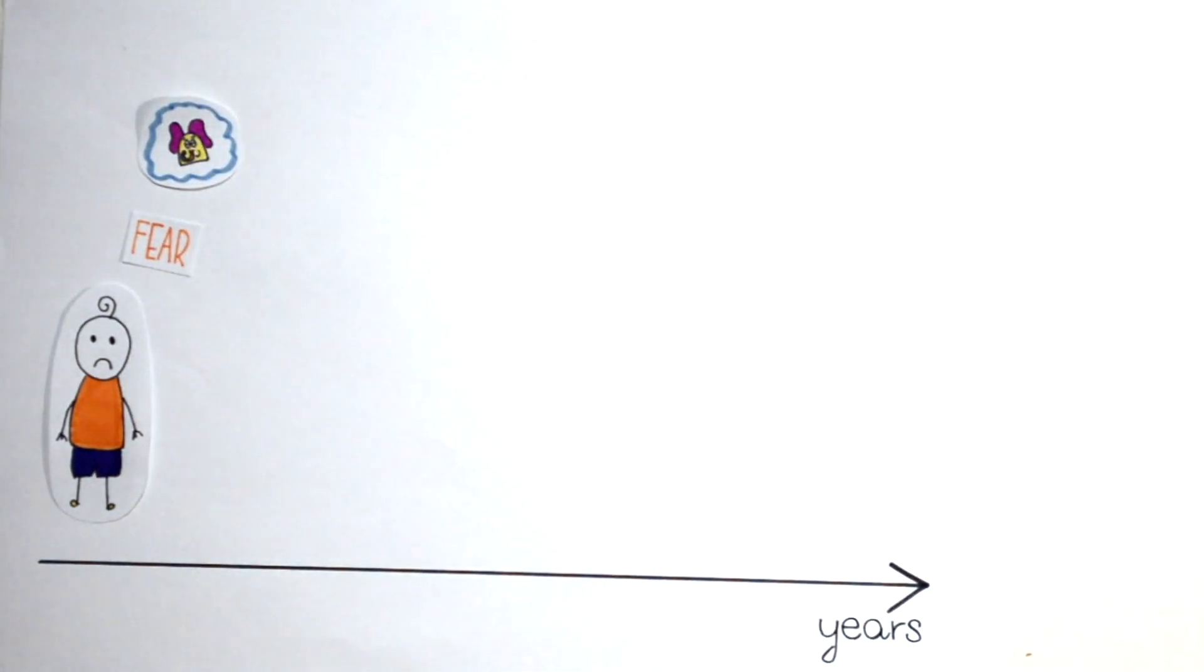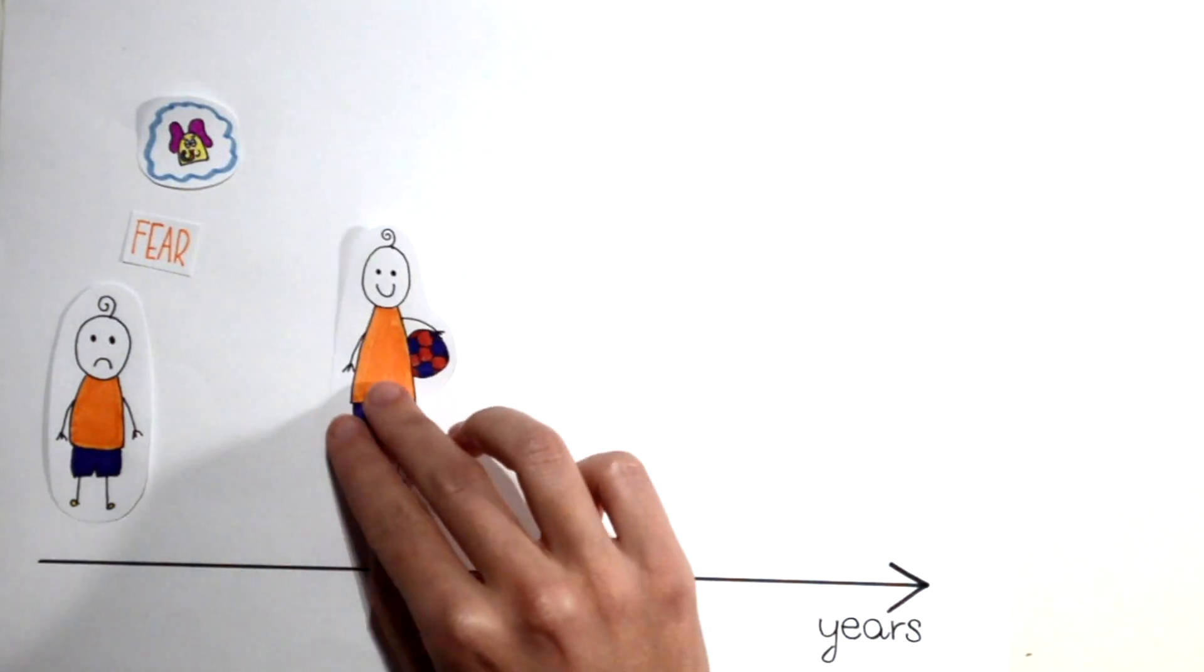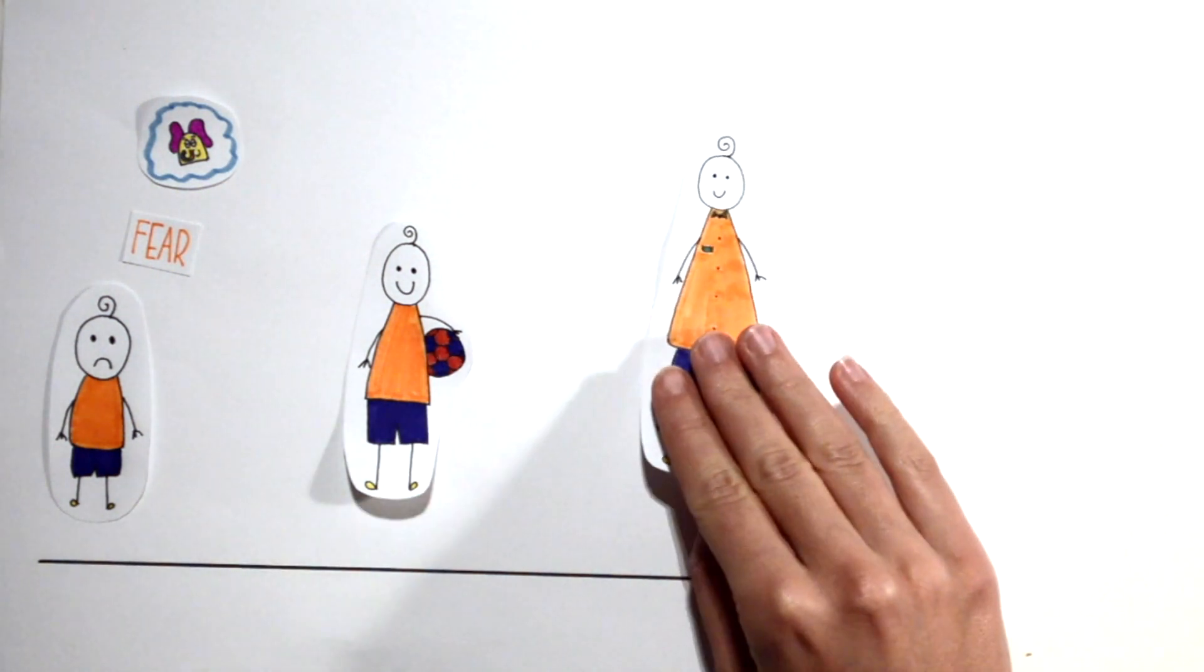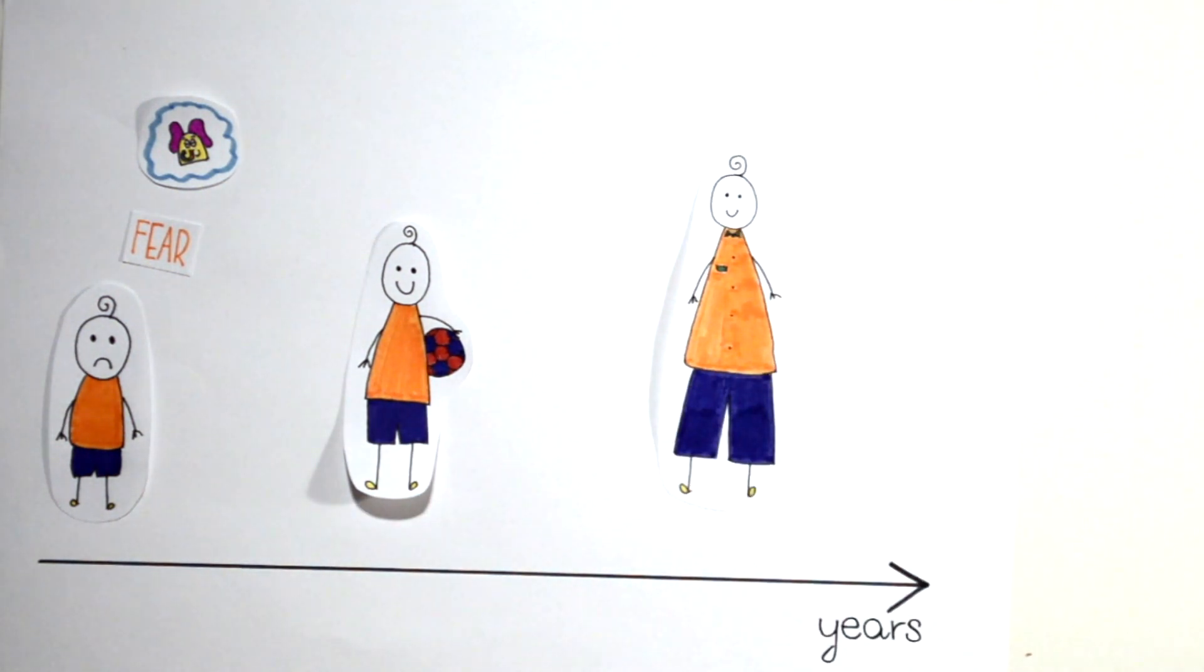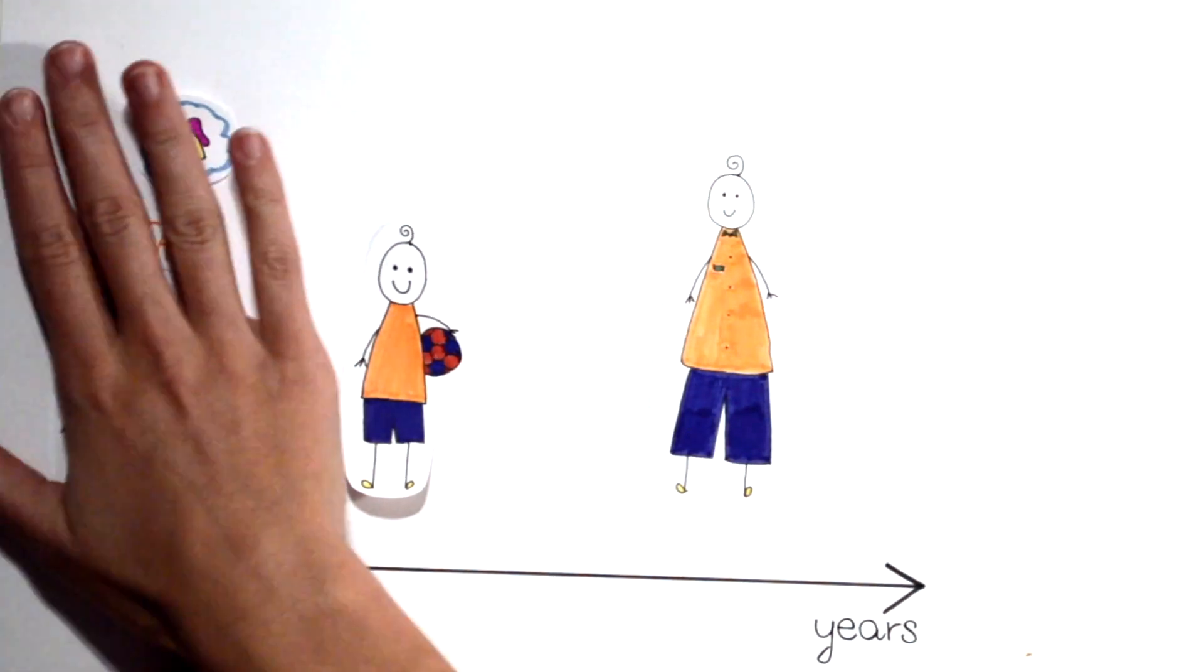When Kyle grows up, he will not need his imaginary companion anymore because he will have enough resources to regulate his feelings. His imaginary companion will therefore disappear.